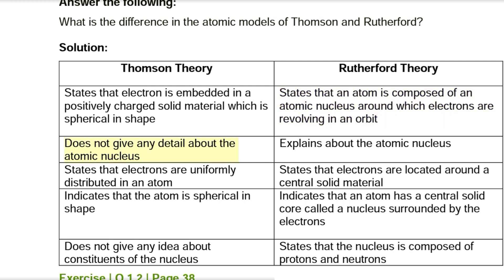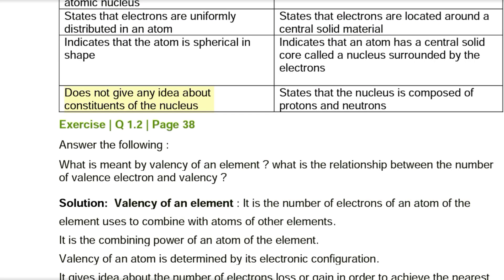Thompson's model does not give any detail about the atomic nucleus, whereas Rutherford's model explains about the atomic nucleus. Thompson states that electrons are uniformly distributed in an atom, while Rutherford states that electrons are located around a central solid material. Thompson indicates the atom is spherical in shape; Rutherford indicates that an atom has a central solid core called a nucleus surrounded by electrons, and that the nucleus is composed of protons and neutrons.